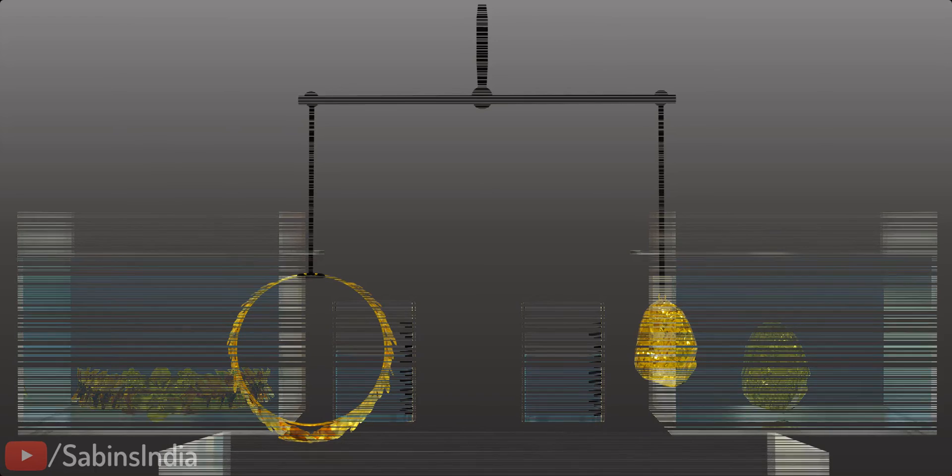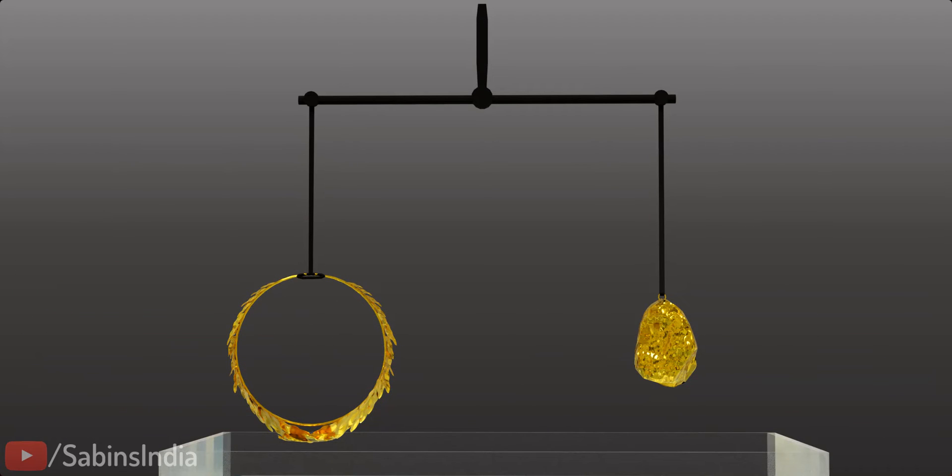Archimedes checked the purity of the gold by using a simple and brilliant experiment, a simple weight balance method. Both the crown and gold lump have the same weight. Assume the crown was impure. This means the crown will have a higher volume.